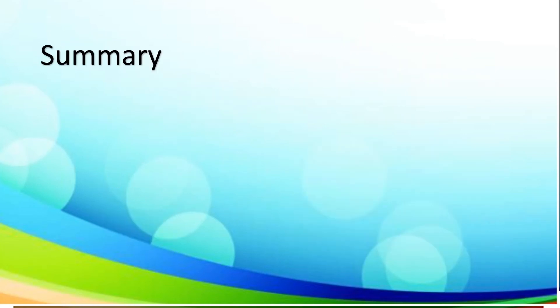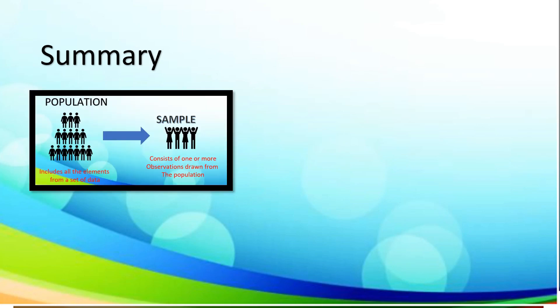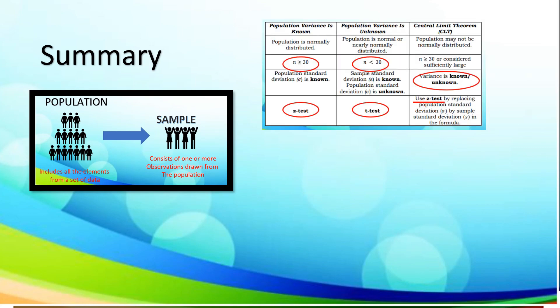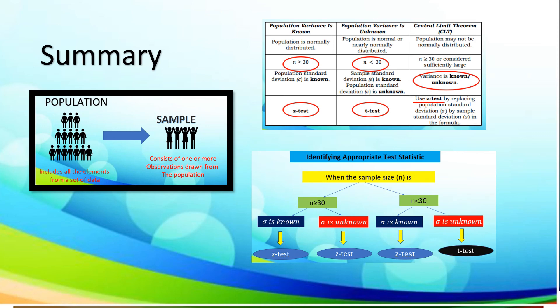For our summary of today's lesson, under quarter 3 module 4, we discussed the difference between population and sample. We also utilized this table to know what kind of test to use given the different parameters. And lastly, we utilized this diagram to apply in a given word problem or situation to determine what type of test to use — whether it is z-test or t-test.